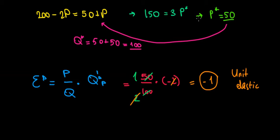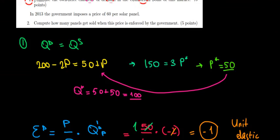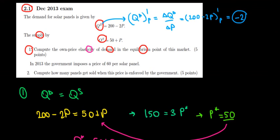And what does this tell us? That at this specific equilibrium point if we increase price by 1% the quantity demanded is going to decrease also by 1%. That's what it tells us. Now I think that was it with this question. In question 2 we have to see what happens when the price is enforced by the government but we will do so in the next video. Thank you.